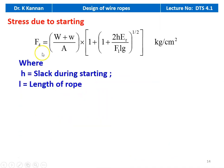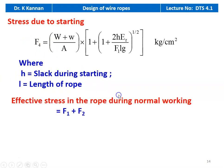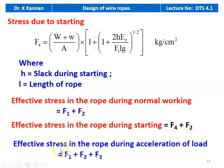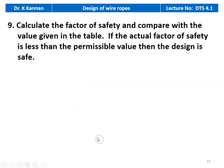The stress due to starting: F4 = [(W + w) / A] × [1 + (1 + 2H·E_R / F1·L·g)^(1/2)] kgf/cm², where H is the slack during starting and L is the length of the rope. If slack is not given, skip the F4 calculation. The effective stress during normal working is F1 + F2, and the effective stress during starting is F1 + F3. Calculate all values, then calculate the factor of safety and compare with the value given in the table. If the actual factor of safety is greater than the prescribed value, the design is safe.